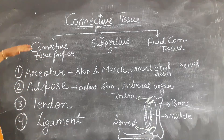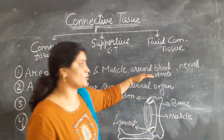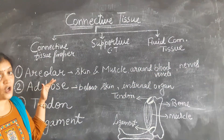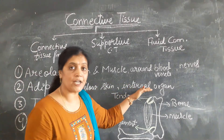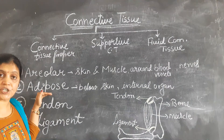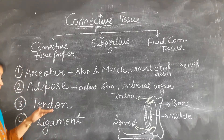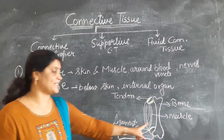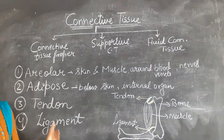Today we discussed connective tissue proper: areolar, adipose, tendon, and ligament. Areolar is found between the skin and muscles and around the blood vessels and nerves — it helps support internal body organs. Adipose is found below the skin and around internal organs; it is a fat storage tissue and also works as a good insulator. Tendon is the joining between bone and muscle, while ligament is the joining between bone and bone.